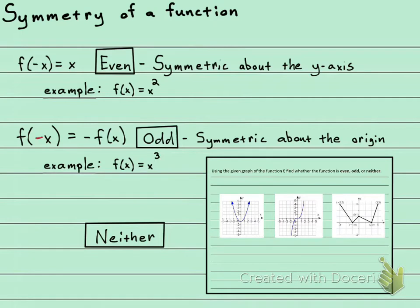You're gonna find the f of negative x. If what you get back is exactly the same as your original function, then it's even. If what you get back is the opposite of your original function, then it's gonna be odd. Otherwise, it's gonna be neither.